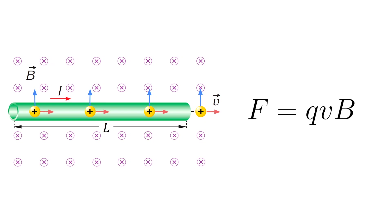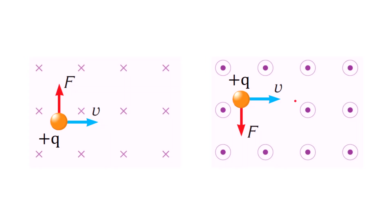The force depends on three factors: the stronger the charge, the stronger the force; the faster the charged particle, the stronger the force; and the force gets stronger if the magnetic field strength also increases. A charge does not need to be inside a wire to feel a magnetic force — any charged particle in free motion in a magnetic field will feel a magnetic force.